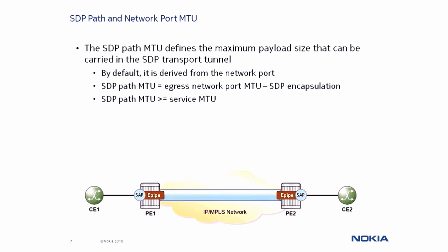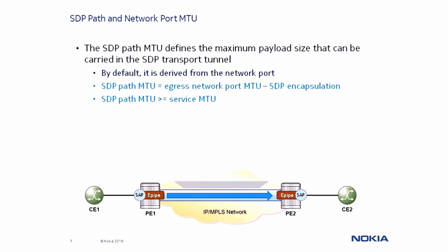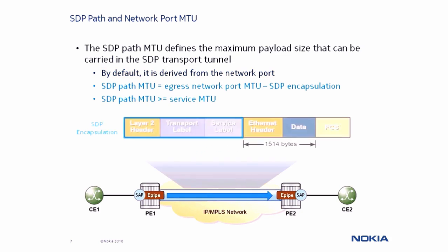The SDP Path MTU is the maximum payload size that can be carried in the SDP transport tunnel, and by default is actually derived from the network ports. This MTU value is calculated by subtracting the encapsulation overhead of the transport tunnel from the egress network port MTU, and it must be greater than or equal to the service MTU.